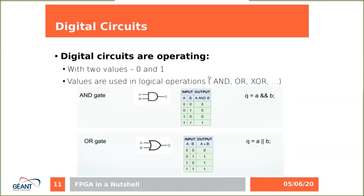We will start with digital circuits. Digital circuits typically operate with zeros and ones. There are some special values like the state of high impedance, which is typically used for communication on buses. But we can say that digital circuits operate with two logical values: logical zero and logical one.